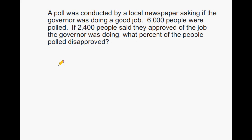The first thing that we want to do is figure out what the problem is asking for. It is asking us to determine what percentage of the people polled disapproved. So the first thing that we are going to do is set up a proportion by writing a fraction bar, an equal sign, and another fraction bar.